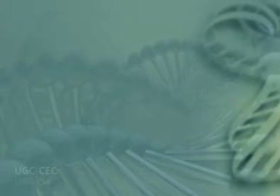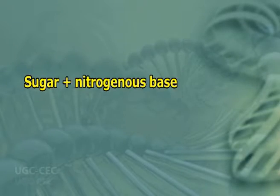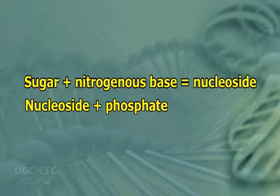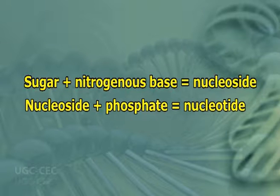What are nucleotides? The nucleotide consists of phosphate, nitrogenous base, and sugar. A nucleoside is only a sugar-base compound, thus a phosphate-containing nucleoside is called a nucleotide. So, sugar plus nitrogenous base equals nucleoside. When a nucleoside is combined with phosphate, it makes a nucleotide.